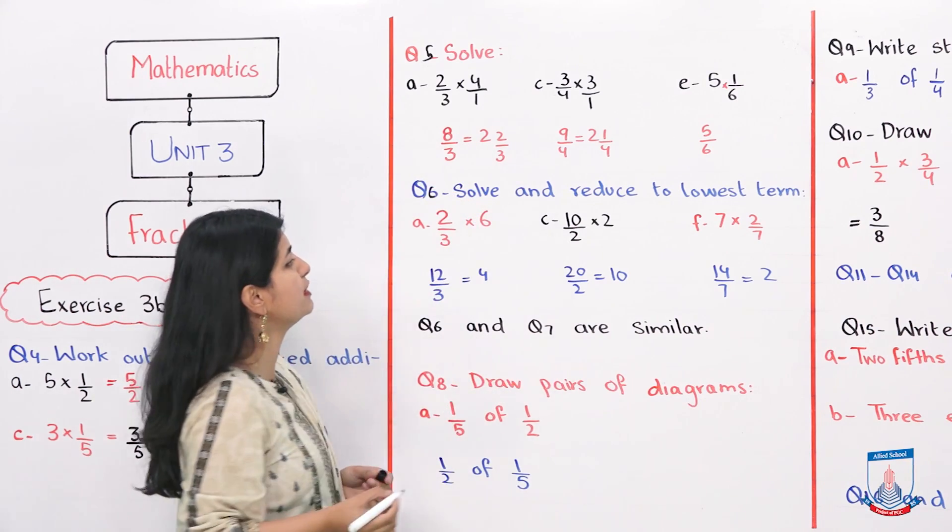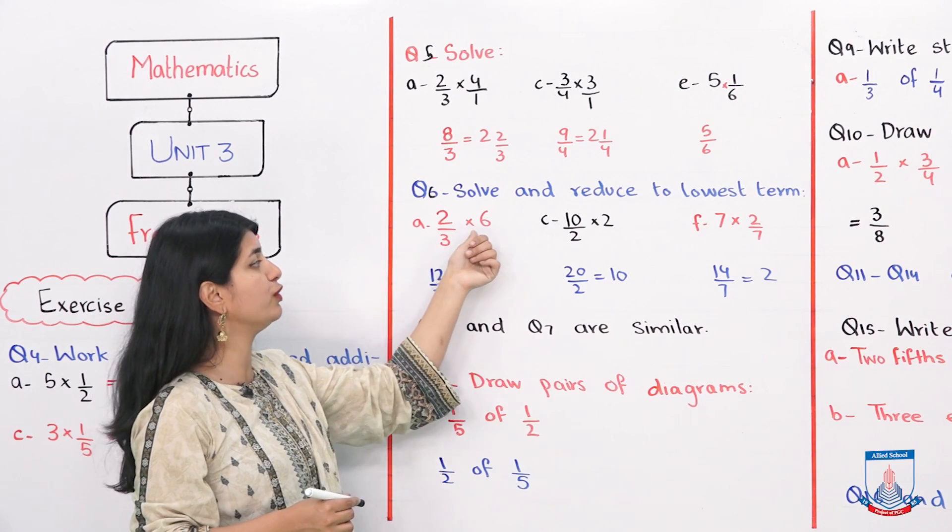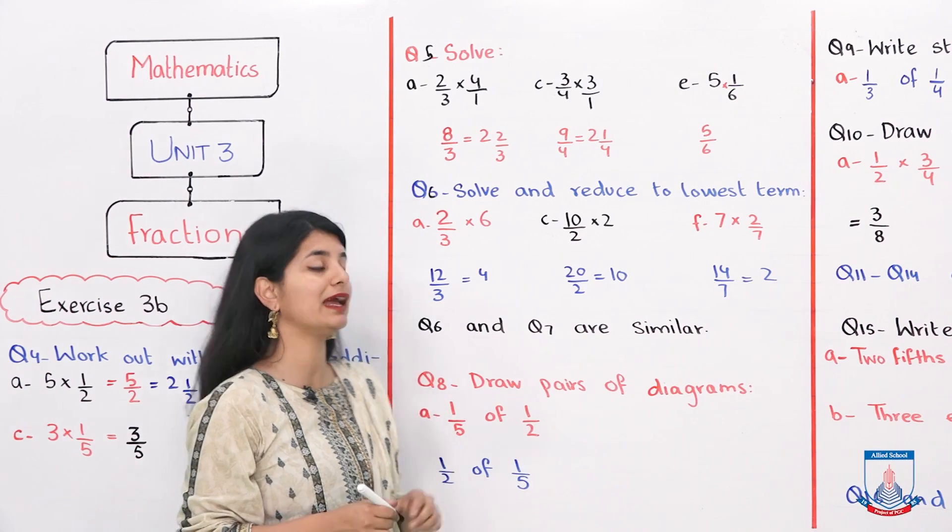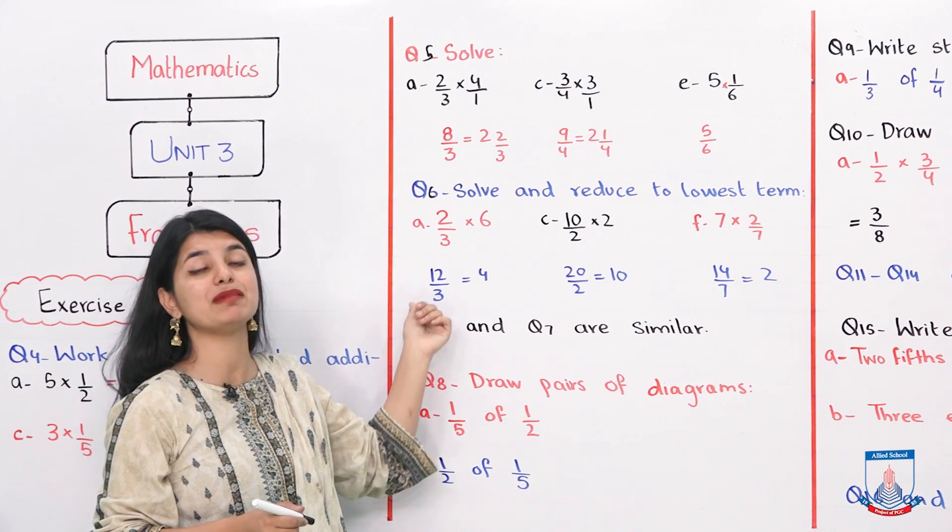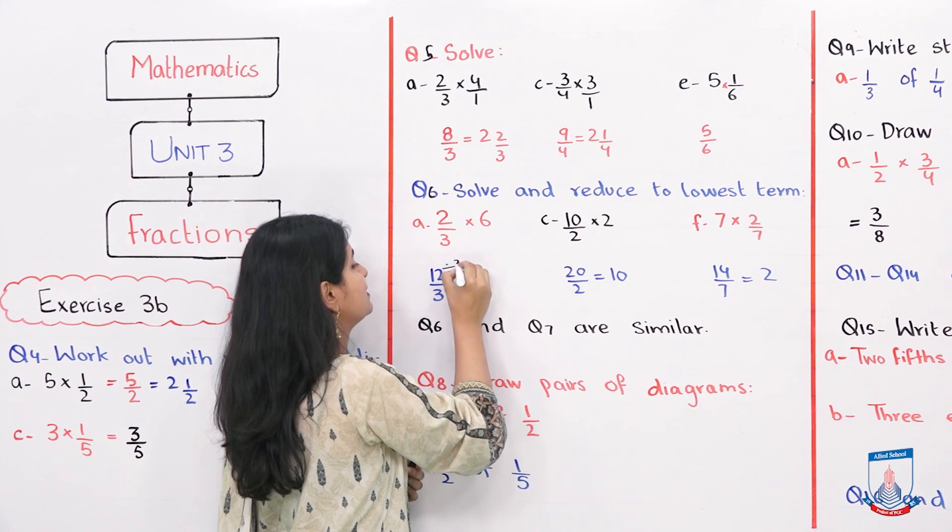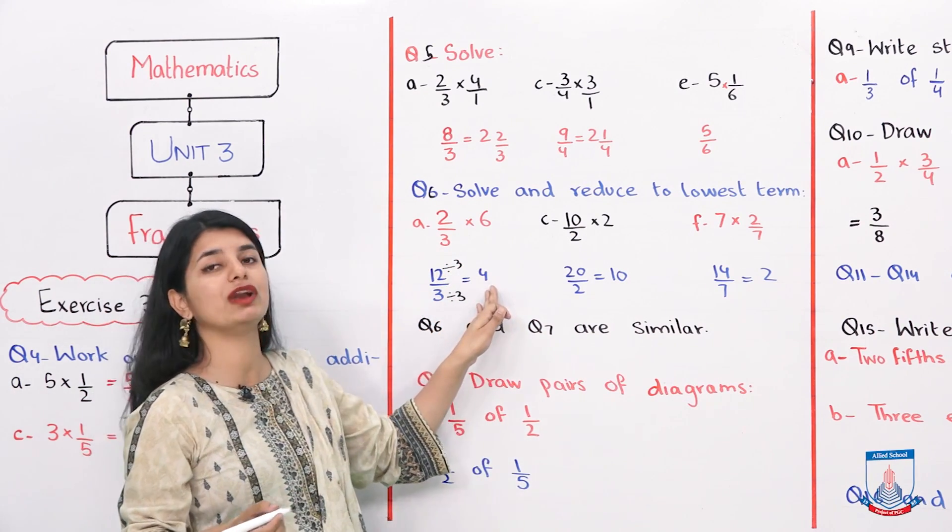The next question is question number 6. It has to solve and reduce to the lowest terms. 2 over 3 into 6. 2 into 6 is 12 over 3. It has to reduce into the lowest term. You have to divide them by the same number. 12 divided by 3 is 4. 3 divided by 3 is 1. Then 4 is your answer.